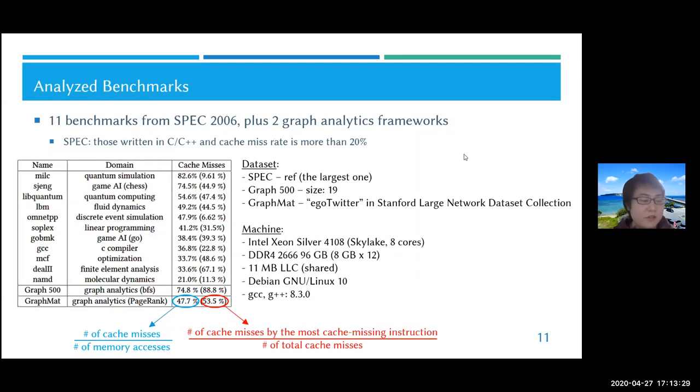Here are the benchmarks we analyzed. We analyzed 11 benchmarks from SPEC CPU 2006 plus two graph analytics frameworks. From SPEC, we chose those written in C and C++ and ones whose cache miss rate is more than 20%. These are the ones selected with their domains and datasets listed here. But due to time constraint, I can't explain in detail.